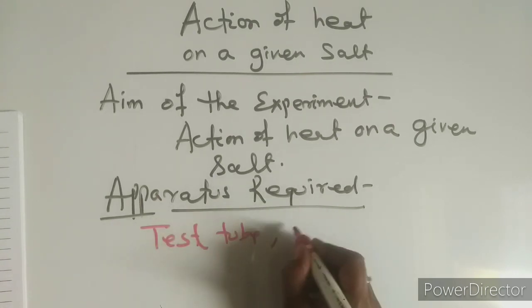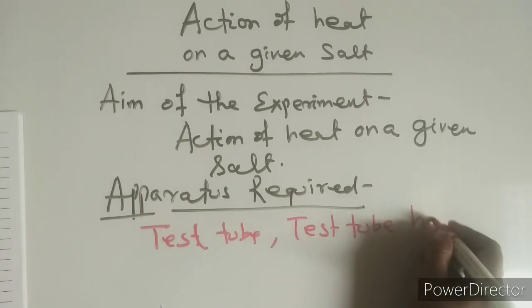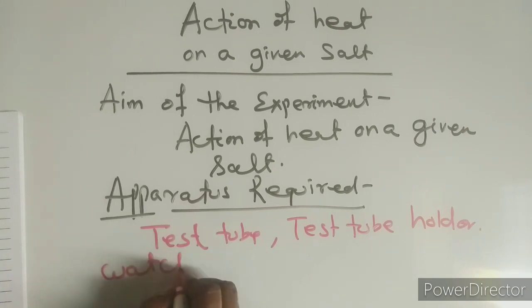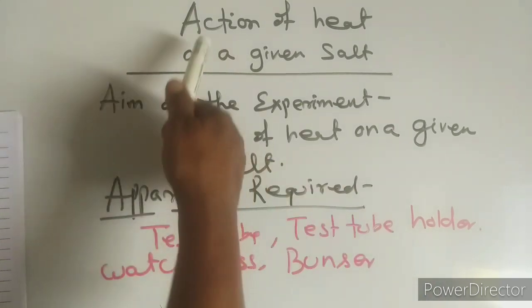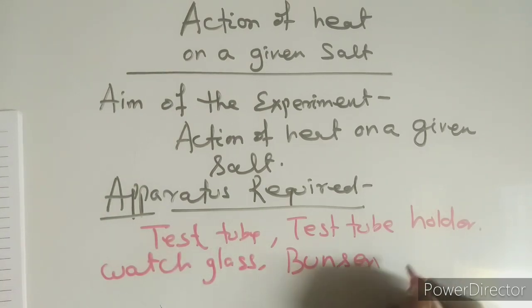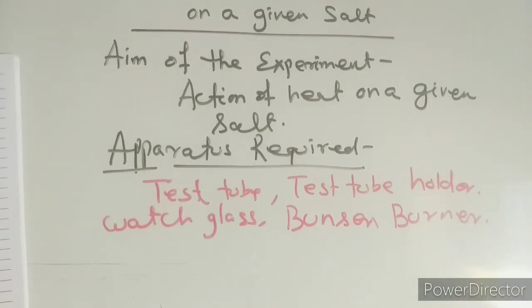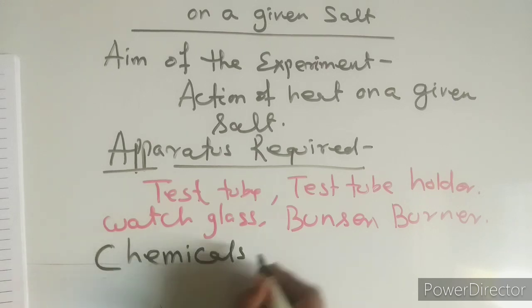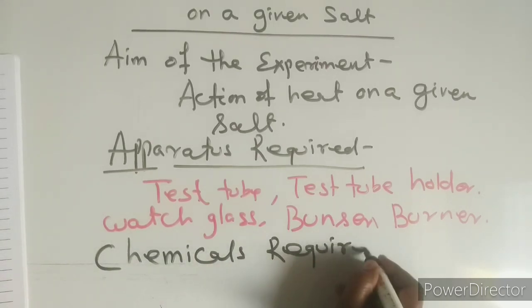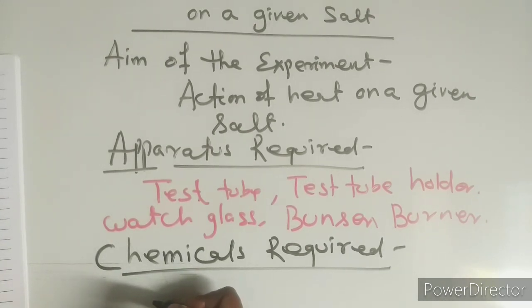The apparatus will include: test tube, test tube holder, watch glass, and Bunsen burner — since this is an action of heat experiment. Then go for another important section: chemicals required. Under chemicals required, list what salts you have taken — for example, hydrated copper sulfate crystals.